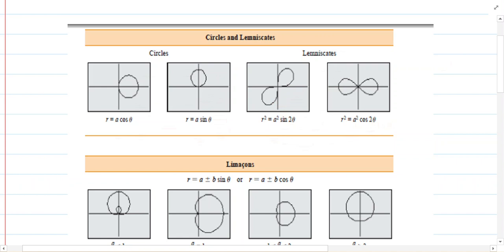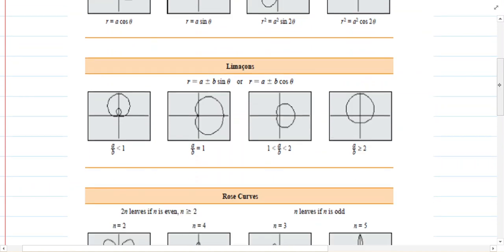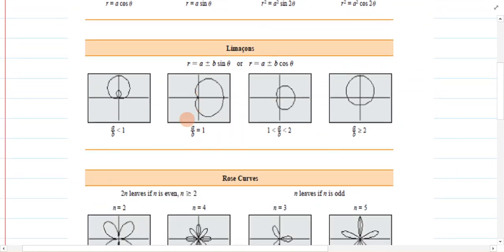Then we've got limacons. They look kind of like lima beans to me, and they have different shapes. This one has an inner loop. This one goes in at the origin but doesn't make that extra loop inside.